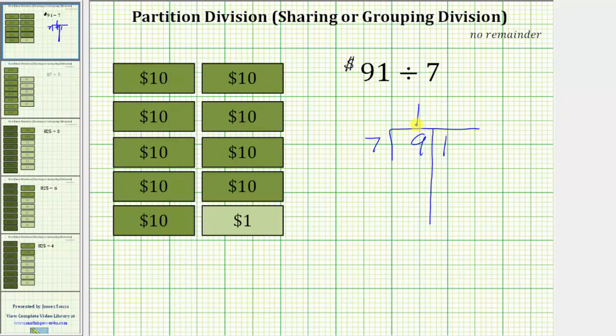If each of the seven friends receive one $10 bill, we have now given out seven $10 bills. We record a seven below the nine and subtract. Also notice one times seven is seven. Nine minus seven is equal to two. This two indicates we still have two $10 bills to share among the seven friends.